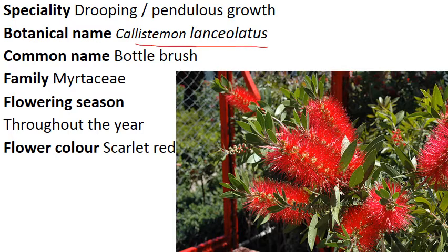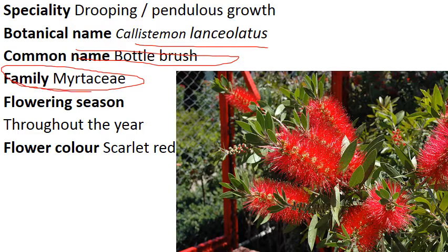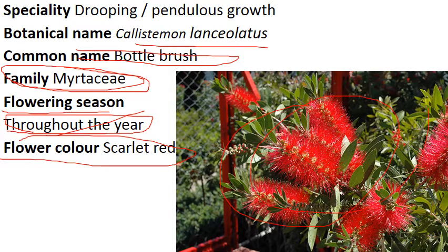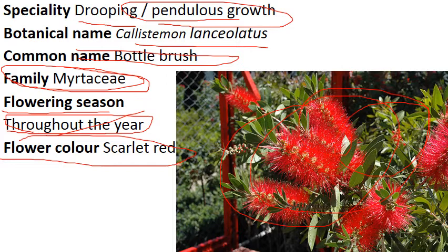Now comes to Callistemon lanceolatus. Common name is Bottle Brush. Family is Myrtaceae — the Eucalyptus family. Flowering season is throughout the year, so it is planted on roadsides and in avenue plantations. Flower color is scarlet red — you can see the scarlet red color here; it's very beautiful. Special character: it has drooping branches with pendulous growth. You should remember some more species having drooping branches, like Polyalthea longifolia and Anogeissus pendula.